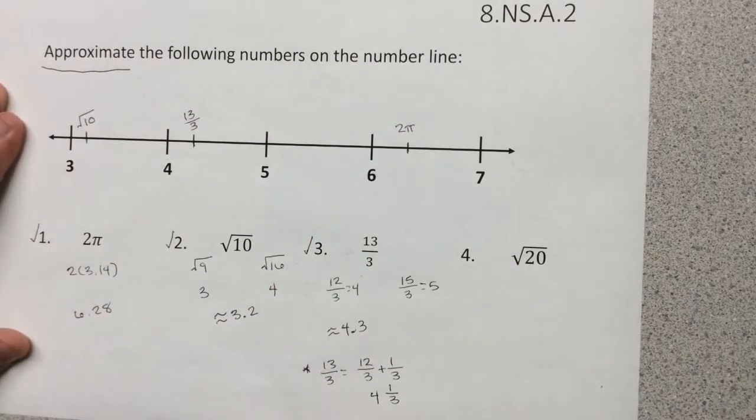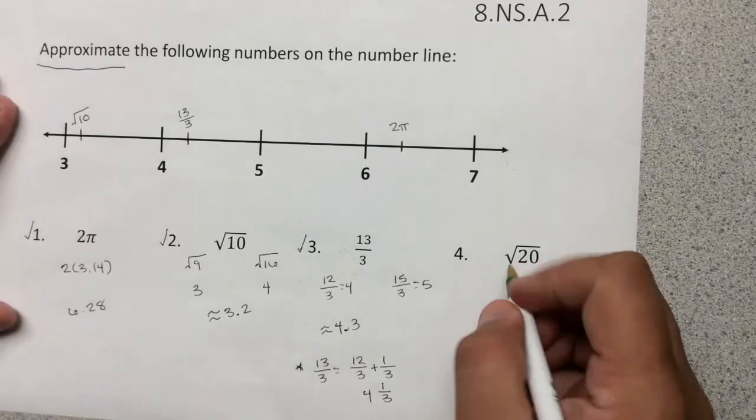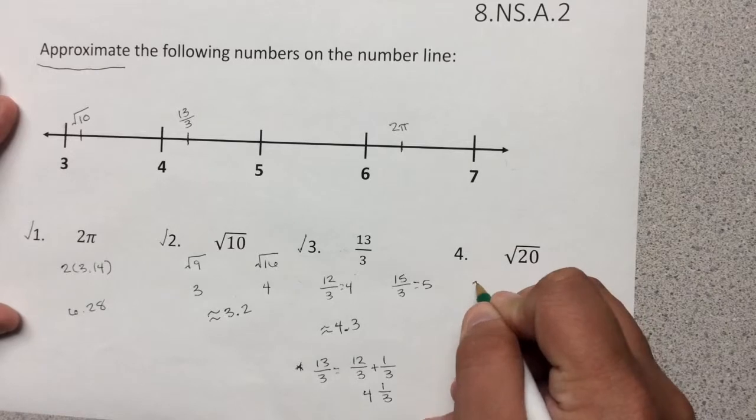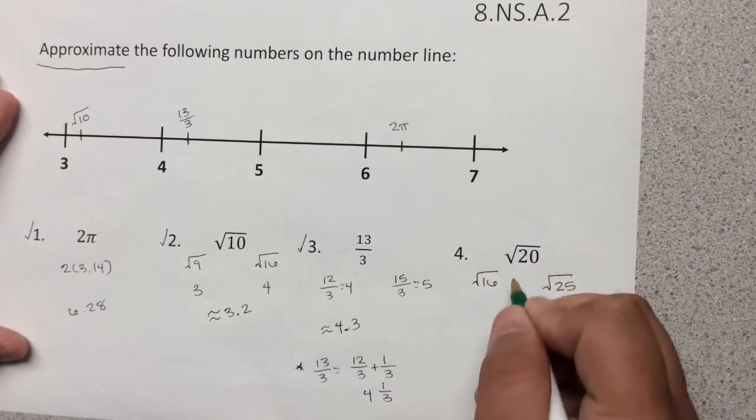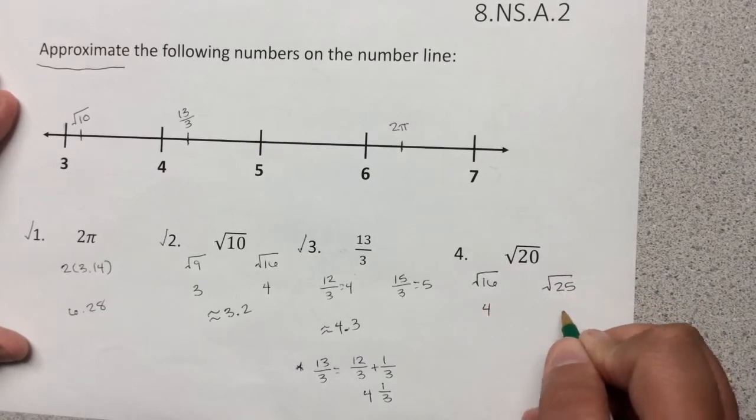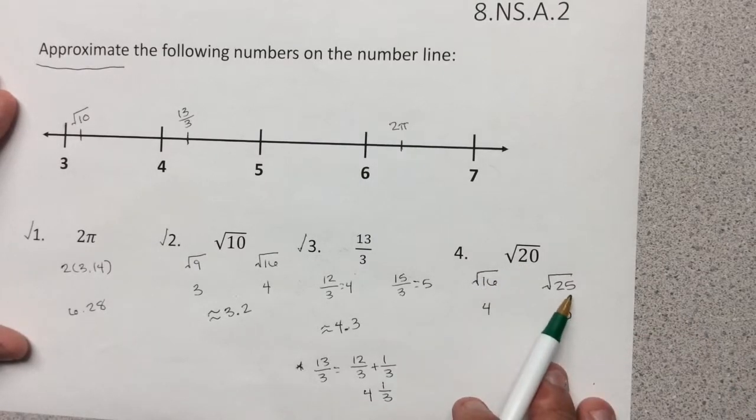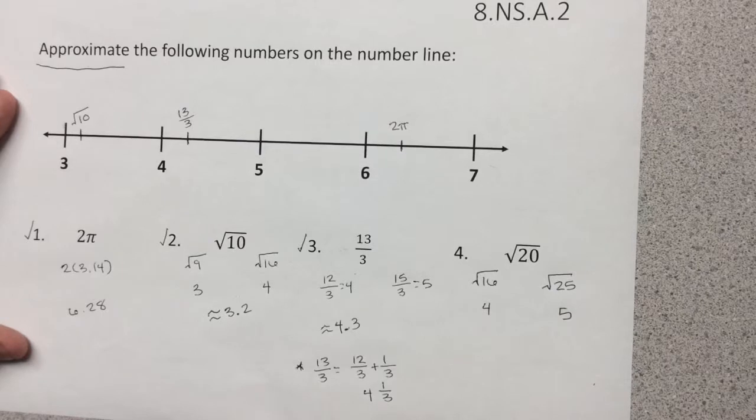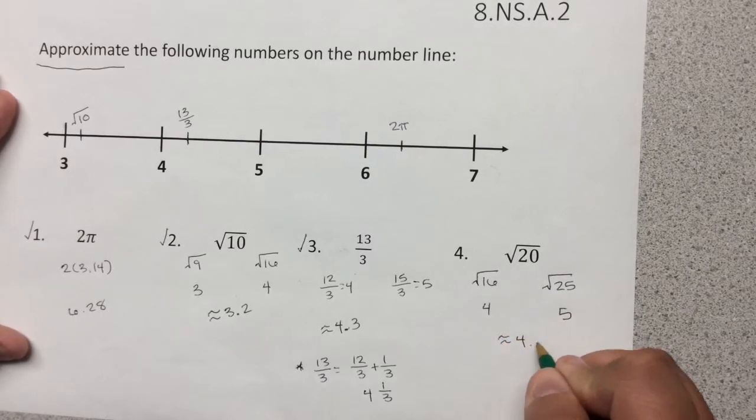Last, we have the square root over 20. We have another square root that is not a perfect square, but by knowing our perfect squares, we're going to be able to approximate. The square root of 20 is in between the square root of 16 and the square root of 25. I know that the square root of 16 is 4, and the square root of 25 is 5. Now 20 is a little bit closer to 16 than it is to 25, but it's pretty close to the middle. So for this one, we're going to approximate it as 4.5.